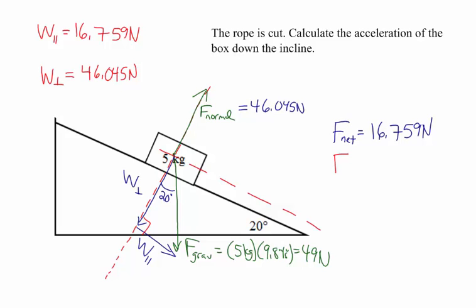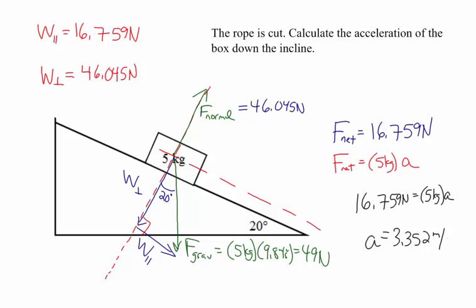Applying Newton's second law: net force equals mass times acceleration. So 16.759 newtons equals 5 kilograms times acceleration, giving an acceleration down the ramp of 3.352 m/s². With this constant acceleration along the ramp, you can then answer one-dimensional kinematics questions — such as how long to reach the bottom, or how fast the box is moving after sliding two meters down the ramp.